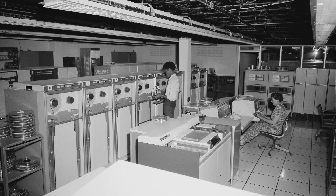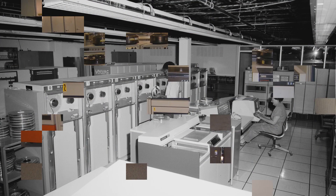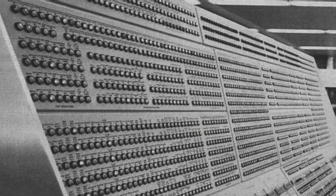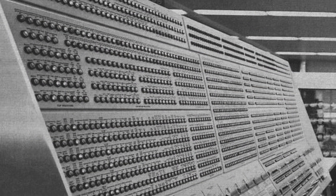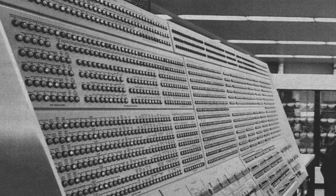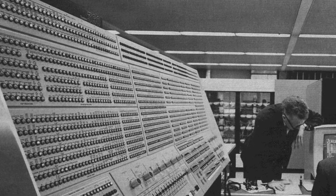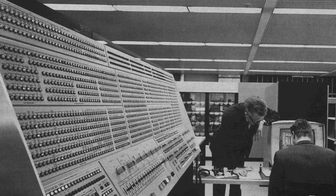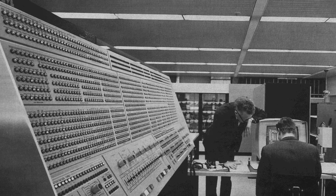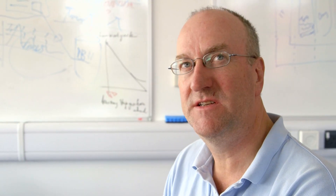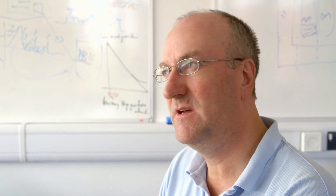Many of the original computer companies produced different computers with different operating systems for different purposes — one for accountancy and one for scientific computation. And IBM, when it started pushing the IBM 360, which was a complete breakthrough in computer architecture, realised they were losing businesses from other sectors because they couldn't run some of the operating systems that they wanted.